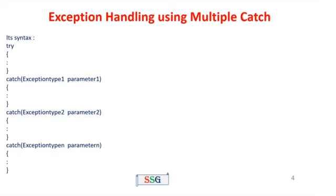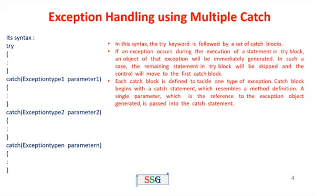Now for exception handling using multiple catch blocks. Multiple catch means we have to use more than one catch block — one try block followed by more than one catch blocks. Let's look at the syntax for this.